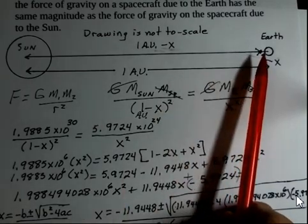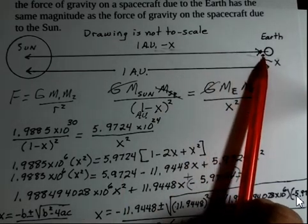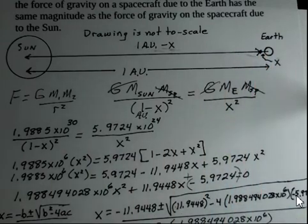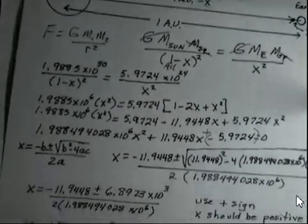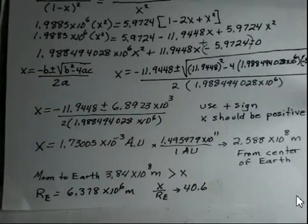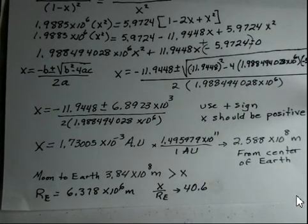Where does the force of gravity from the sun on the spacecraft have the same size as the force of gravity of the earth on the spacecraft? And we find that value is 2.588 times 10 to the 8th meters from the center of the earth.